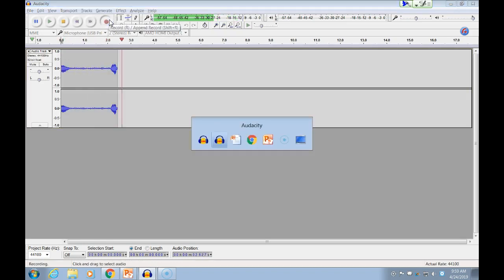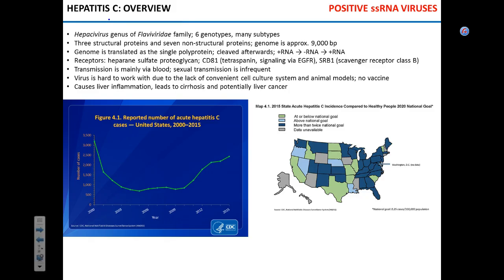We have a couple more viruses to chat about. The first one is hepatitis C — it's a pretty interesting story. Hepatitis C turns out belongs to the same family as the plague viruses we were just talking about. It's also a positive single-stranded RNA virus, very similar structure.